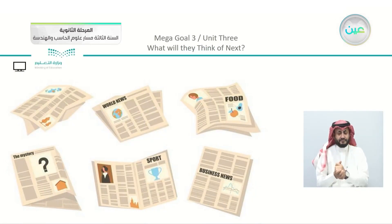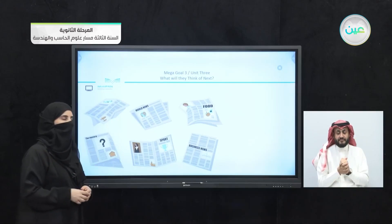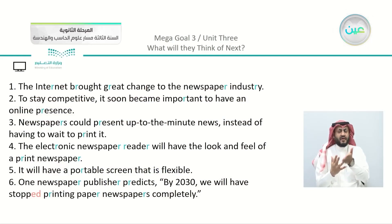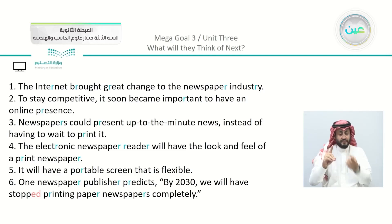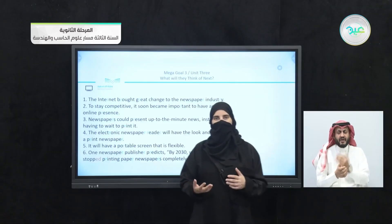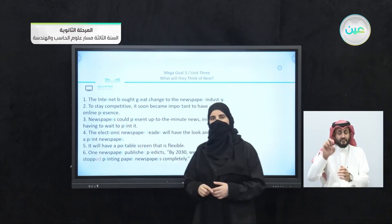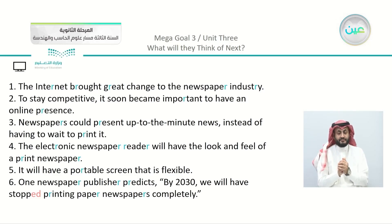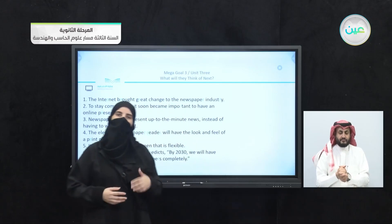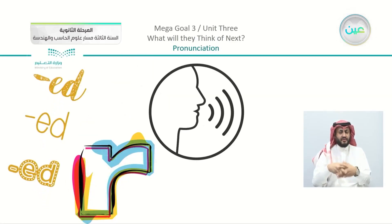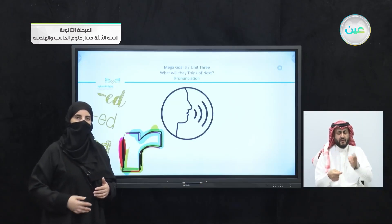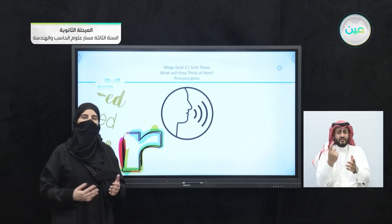I want to show you a script, which is actually the part you listened to in our last lesson. We are going to read the parts you can see. By the way, I colored the letter R and at the very end there is an ED that is colored. Does this remind you of something? For example: 'newspapers,' 'reader,' 'portable,' 'predicts,' and 'stopped.' I am hinting at what we learned in unit one and unit two — the R sound and the ED — which were the pronunciation lessons from past units. This reminds us that we can always practice what we have learned, even as we move on.